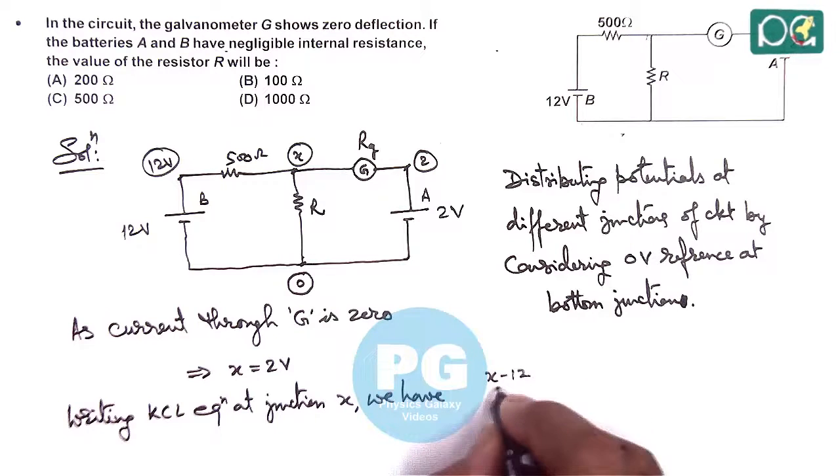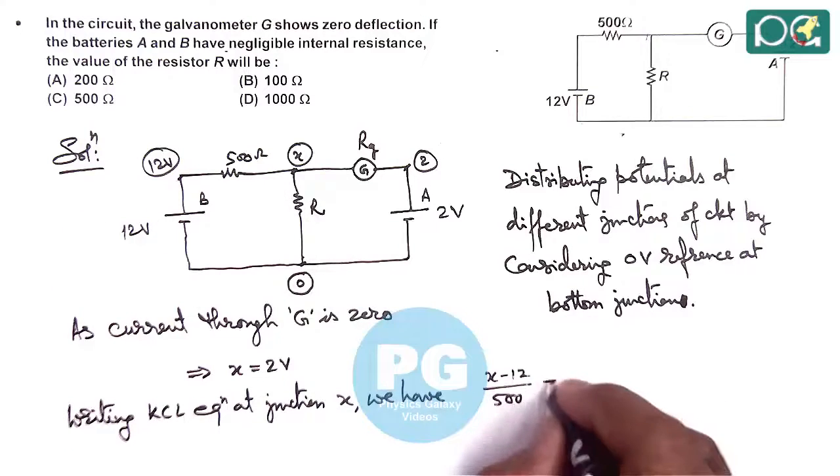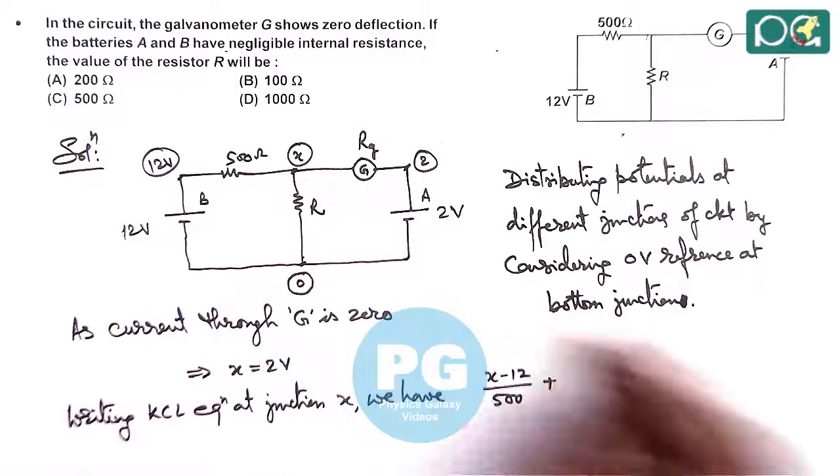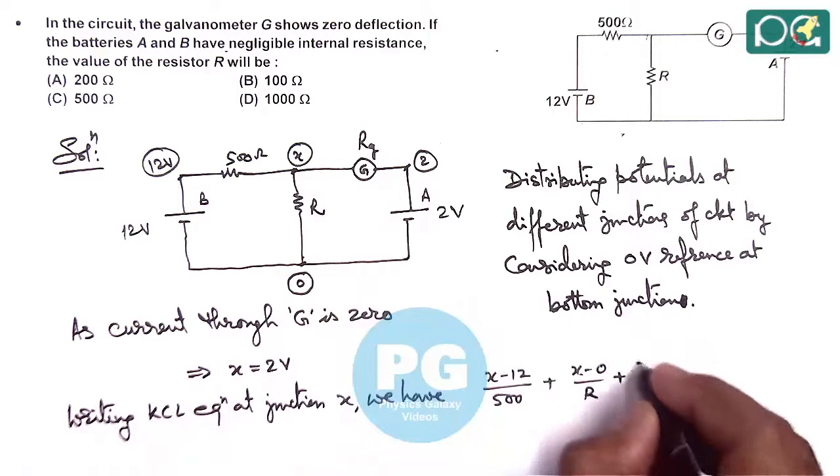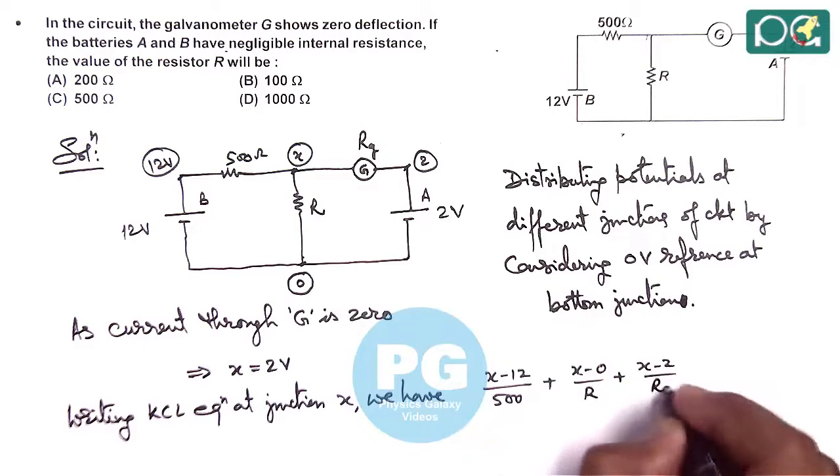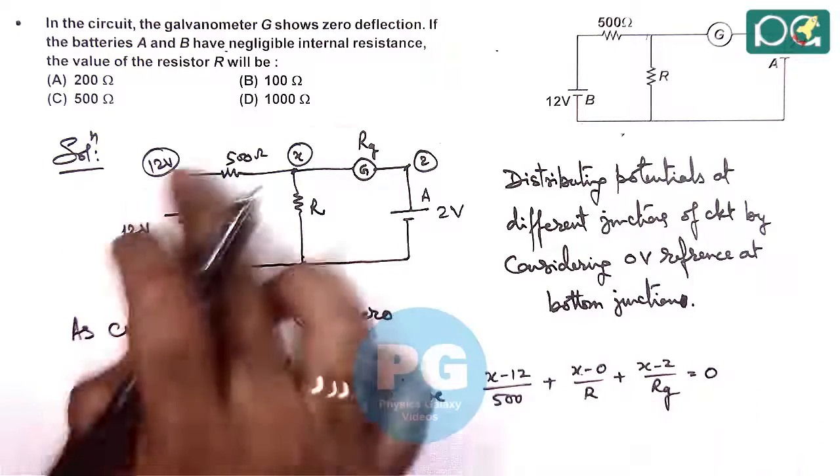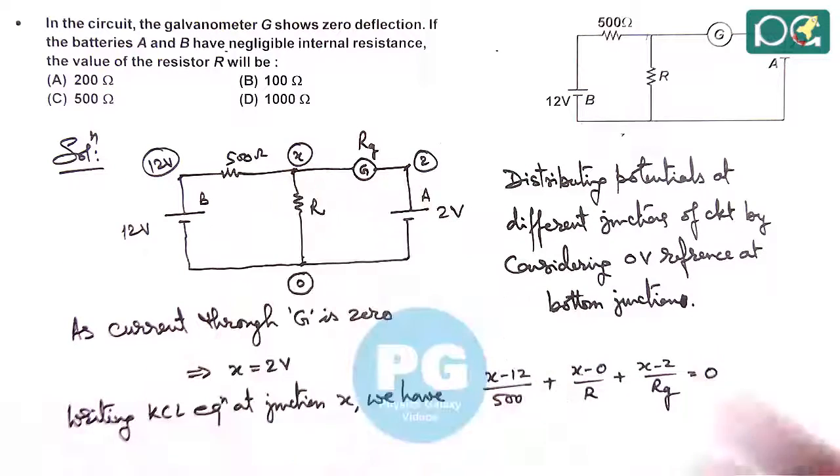(X - 12)/500, this is the current from X to the 12 volt junction, plus the current from X to 0 which is (X - 0)/R, plus the current from X to 2 which is (X - 2)/RG. This should equal zero, because the sum of all outgoing currents from this junction should be zero.